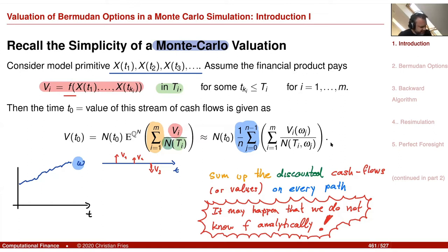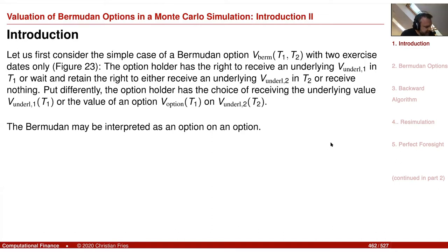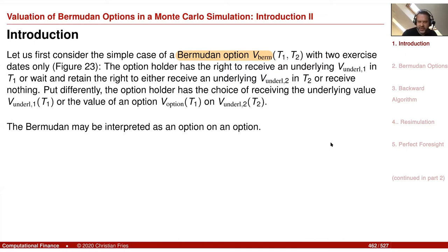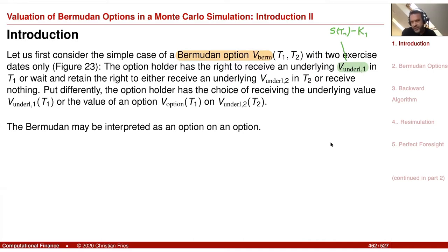An example where we don't know f analytically is the Bermudan option. Consider a simplified example with two exercise dates T1 and T2. The option holder has the right to receive some underlying. For example, at T1 you can receive S(T1) minus K1, taking the maximum of that and zero. So you have the option to receive this.